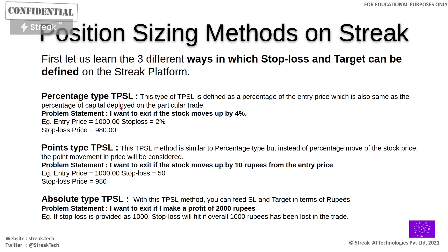The first method is percentage type TPSL, which is the simplest method. Problem statement: I want to exit if the stock moves up by 4%, or if the stock moves down by 2%. For example, if your entry price is 1,000 rupees and stop-loss is 2%, then your stop-loss level is 980 rupees. If the stock hits 980 rupees, the stop-loss is triggered.